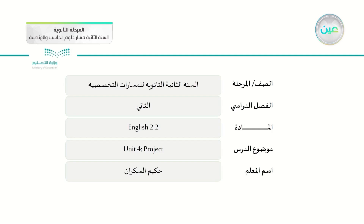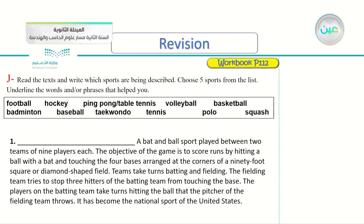We'll be doing a lot of stuff today. I'll be telling you to do something and instructing you to do some research about some specific sports. So before we do that, let's open our workbook page 112. We will be answering some questions, revising our previous lessons. Exercise J: read the texts and write which sports are being described. Choose five sports from the list, underline the words or phrases that help you.